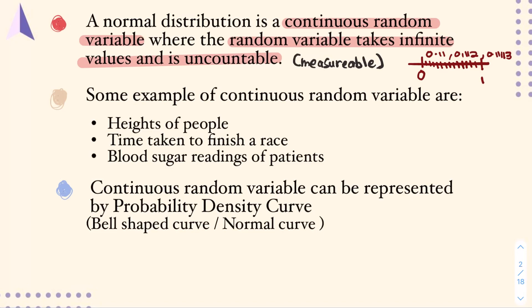There are a few examples over here that you can see. For example, the heights of people, the time taken to finish a race, the blood sugar reading of patients. Let's say the heights of people - you can say that a person can have 169 cm or 169.5 cm, where between the two numbers 169 and 170, you can have infinite numbers.